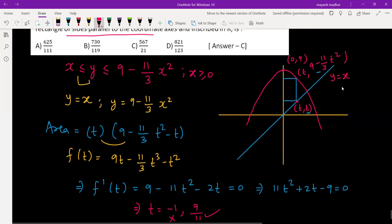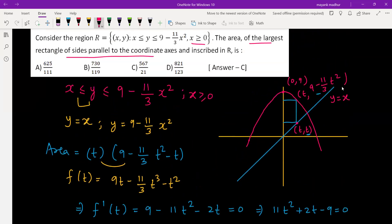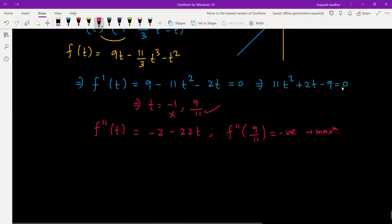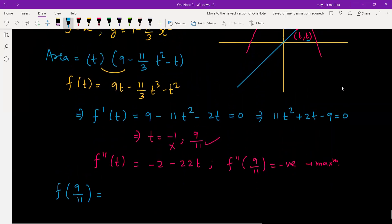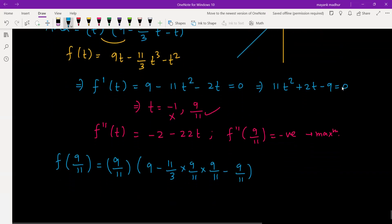Now what do we need? We need the maximum area, the area of the largest rectangle. So let's find out the area of the largest rectangle by putting t equal to 9 by 11 in this function. Let's put it here. So it will be 9 by 11 into 9 minus 11 by 3 into 9 by 11 whole square minus 9 by 11.